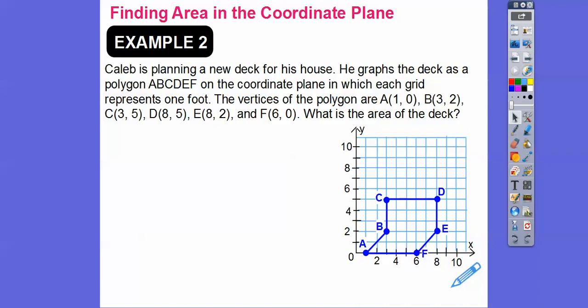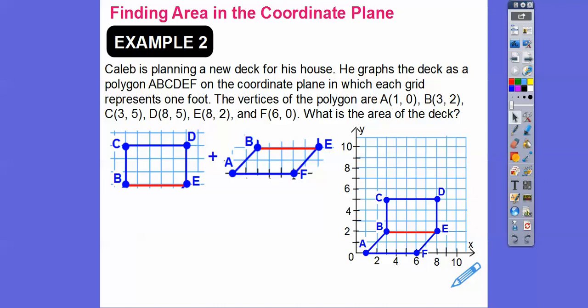So hopefully, you remember from a few lessons ago, if we drew this horizontal line right here, then we have a rectangle on top and a parallelogram on the bottom. And so when we do that, there it is right there. So the area of a rectangle is base times height. The area of a parallelogram is also base times height. So what I did is I found the base and the height of each one.